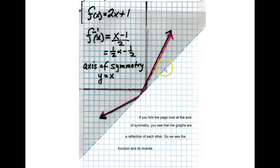I folded my transparency right across this axis of symmetry. And what do you see? Well, the lines of the graph line up on top of each other. So if you fold the page over the axis of symmetry, you see that the graphs are a reflection of each other along this axis of symmetry.